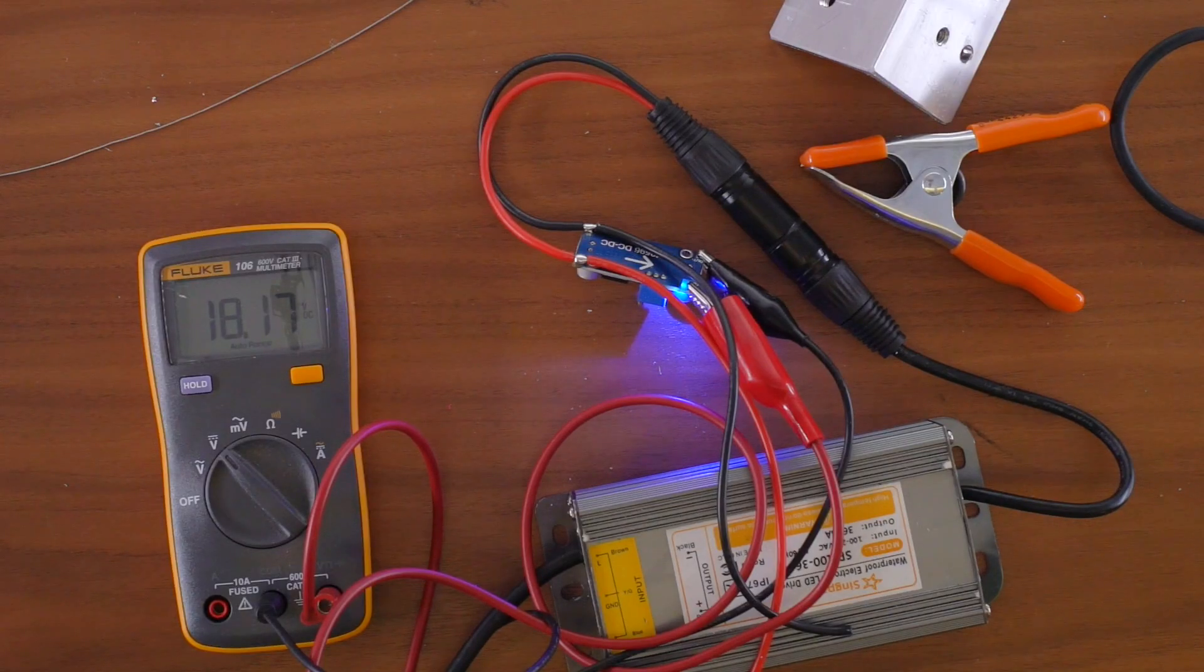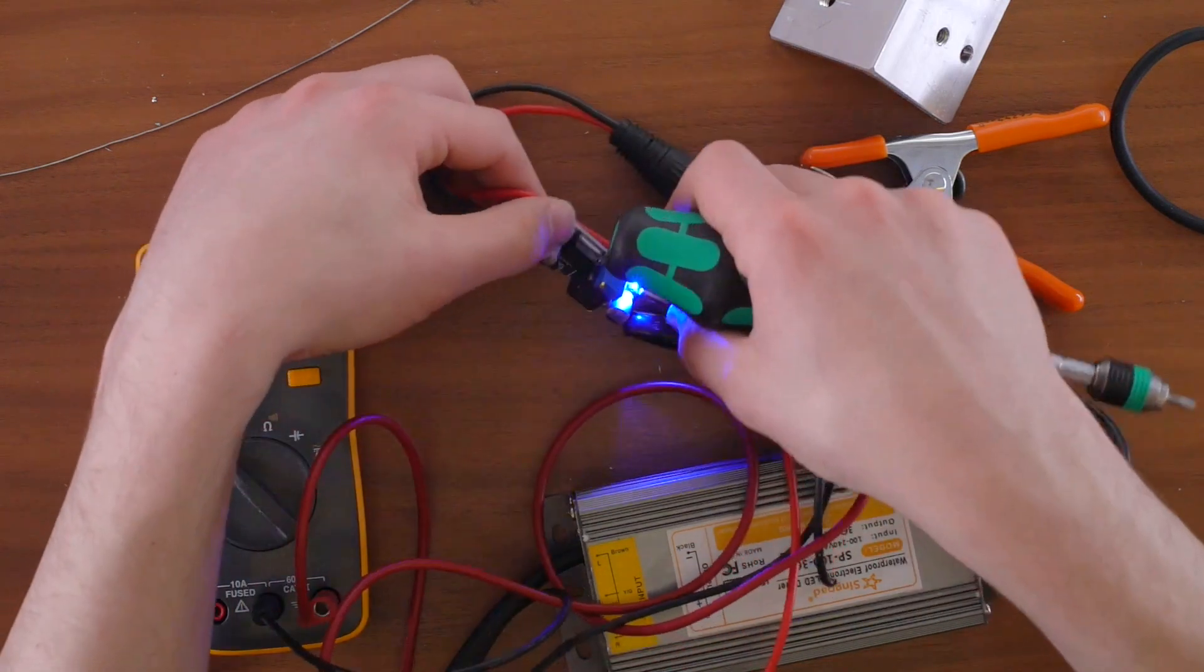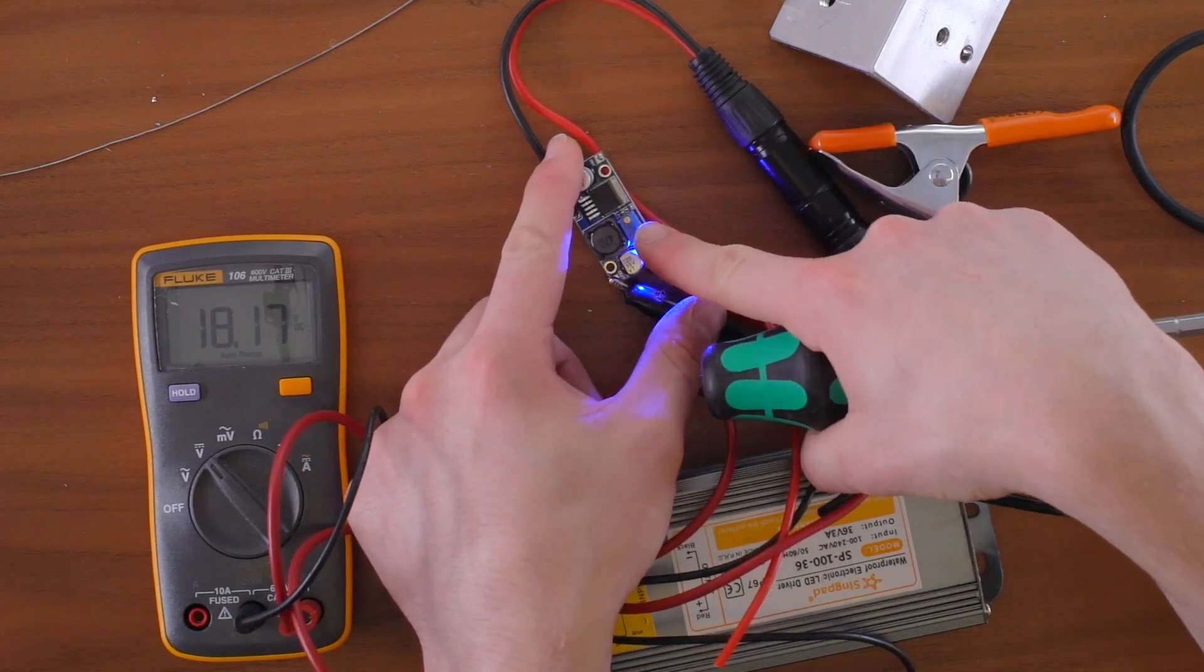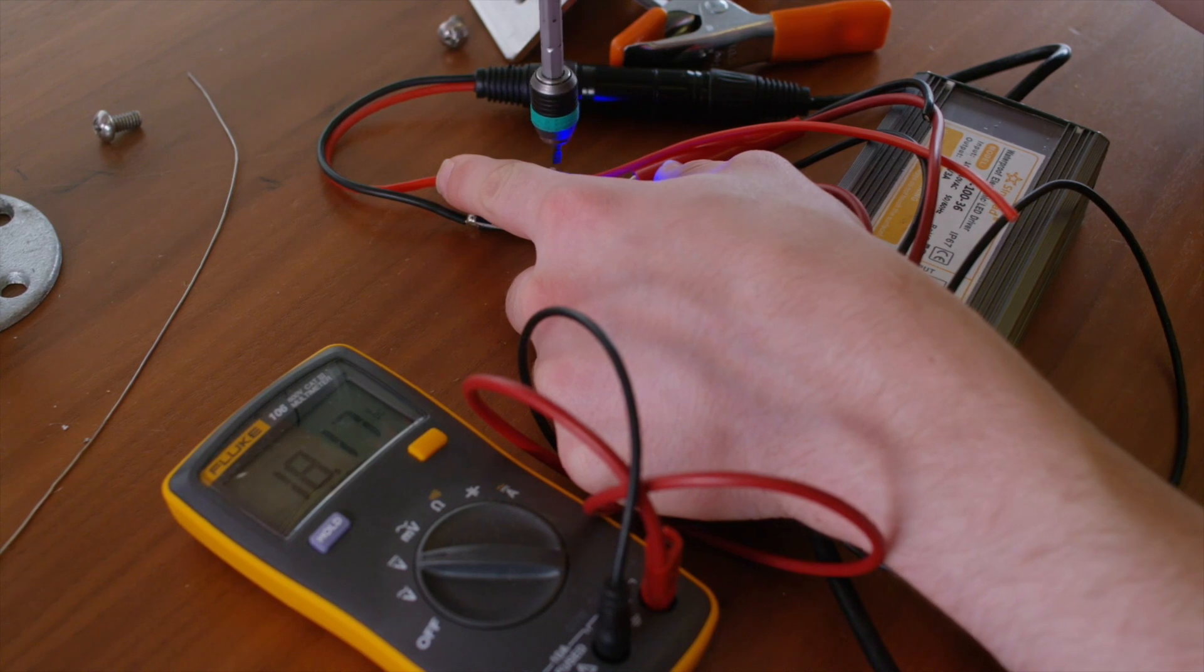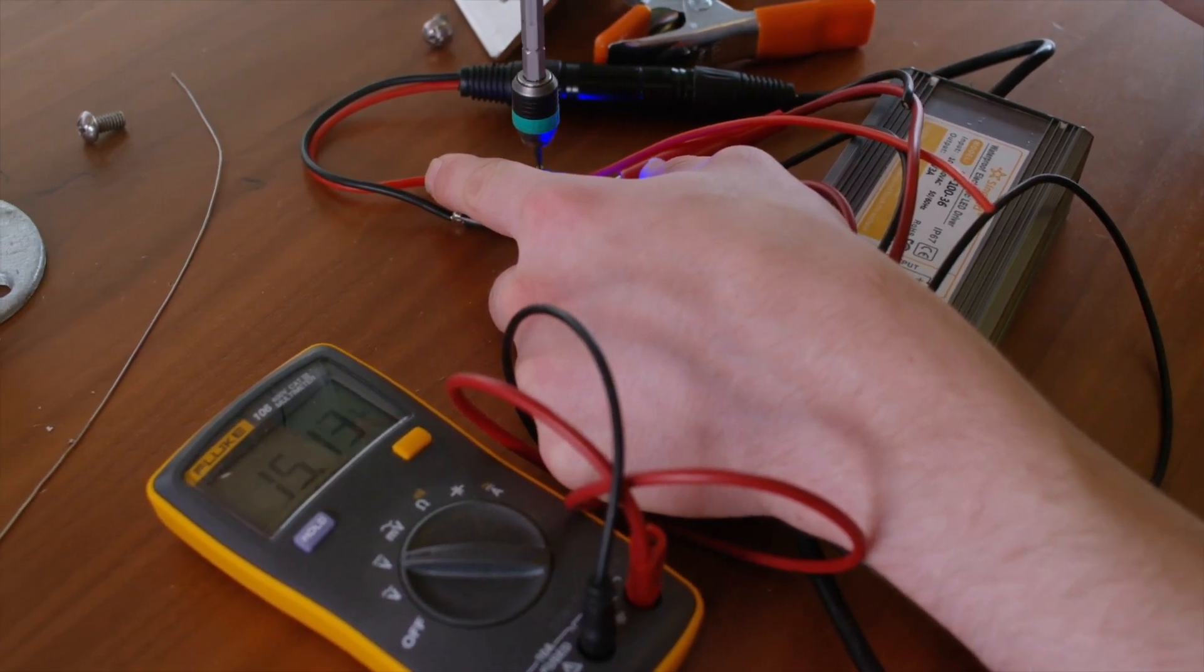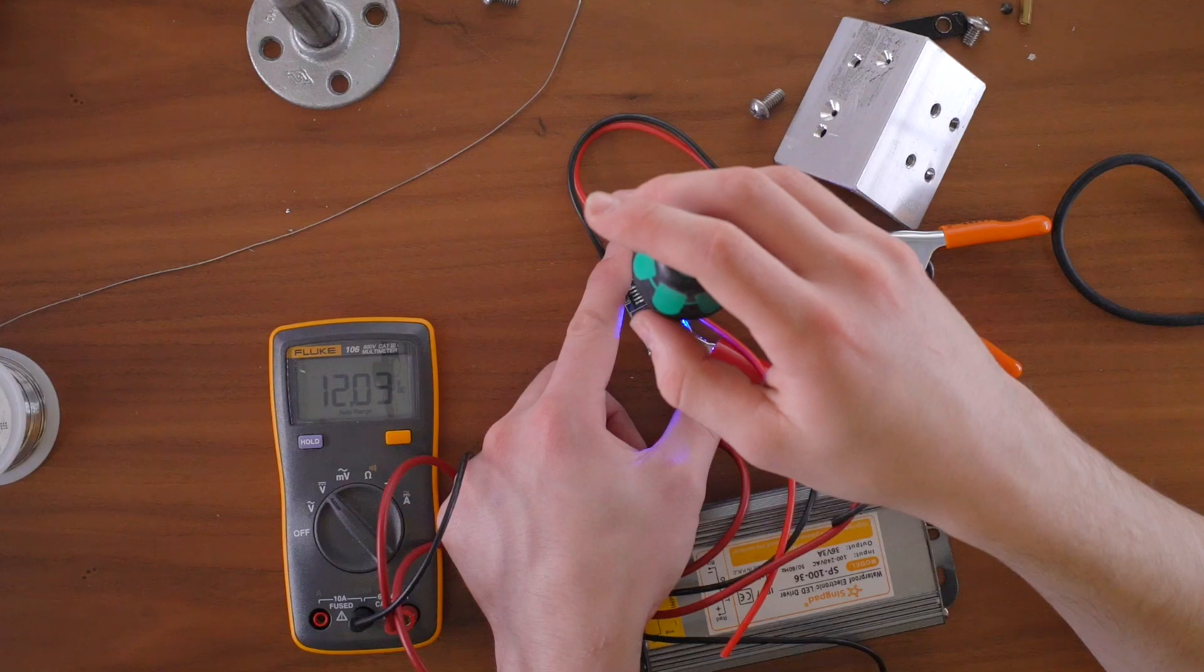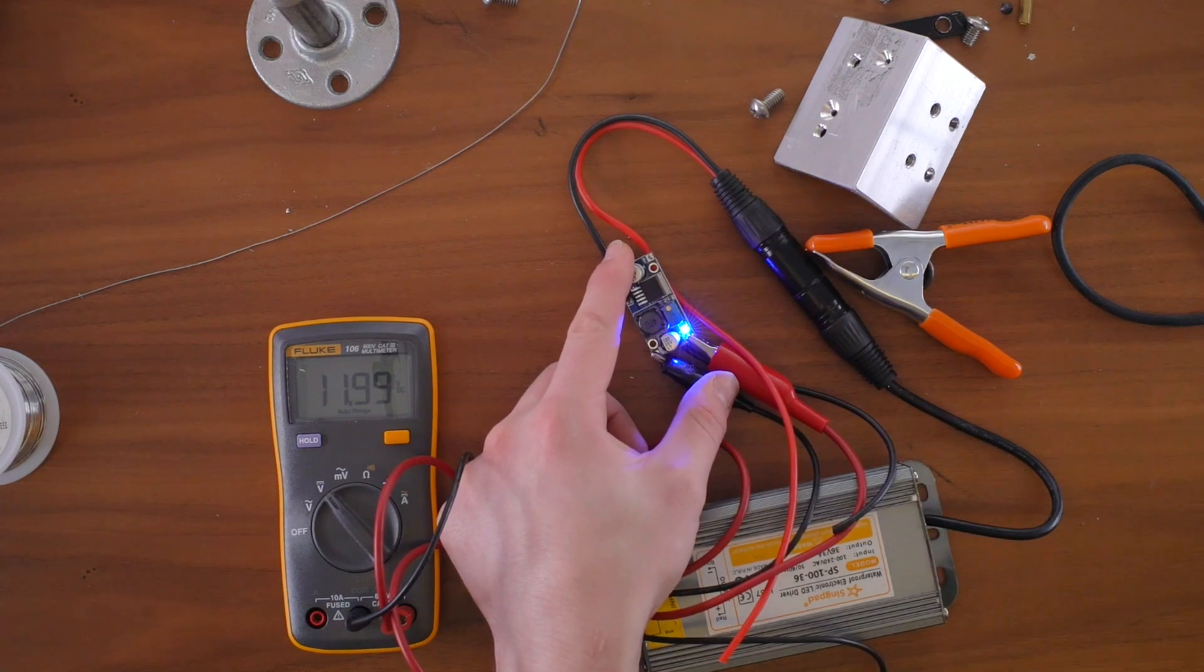We're actually looking for somewhere around 12 volts to run the fan, so I'm going to go ahead, take my flathead screwdriver, turn this over, and crank down on this potentiometer, turning it left counterclockwise until we reach 12 volts. Cool. That is pretty close, I'll take it.